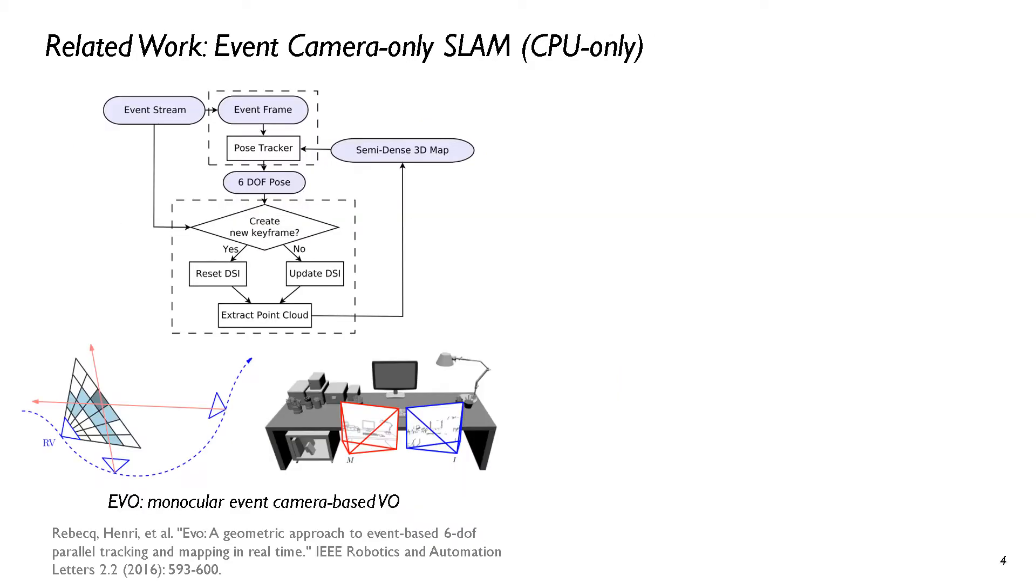EVIL is the first event camera-based SLAM system using a CPU. It employs the plane-swept methods for mapping and uses the event map for real-time tracking.